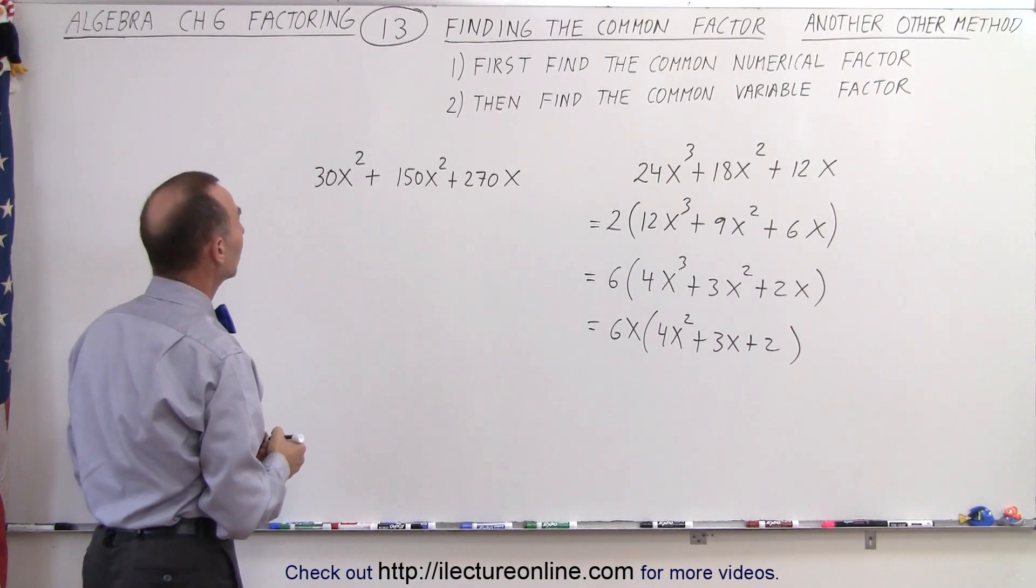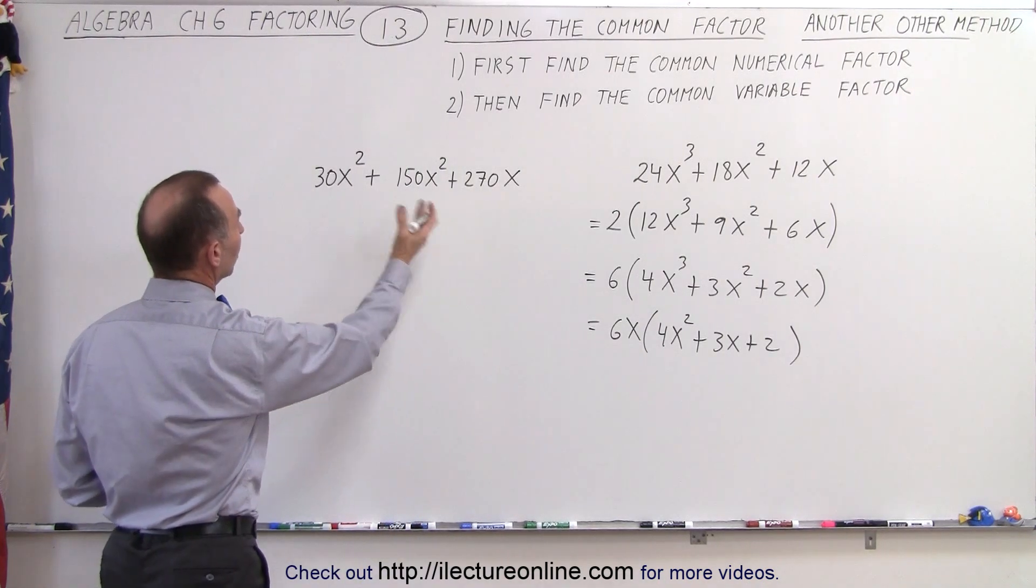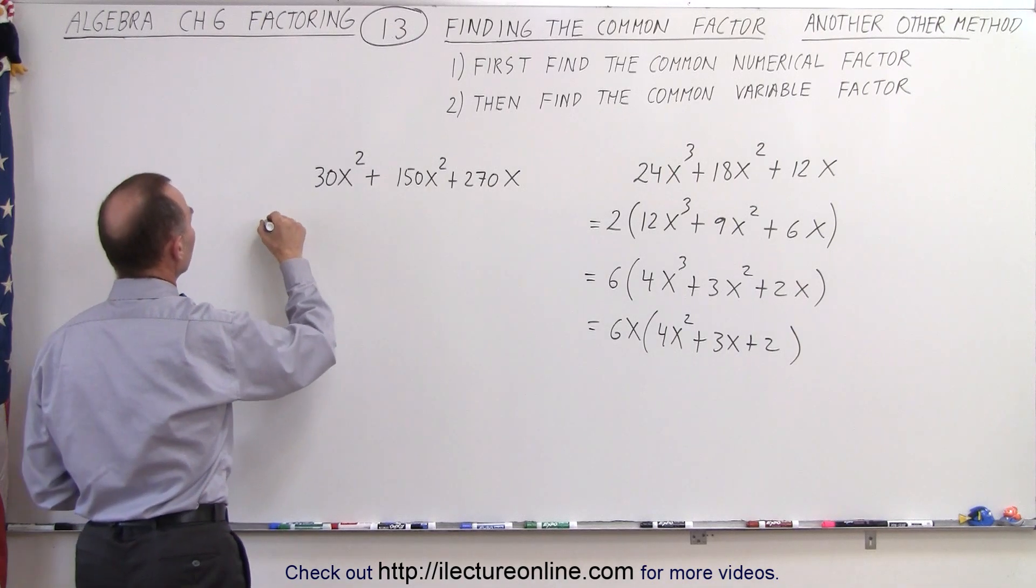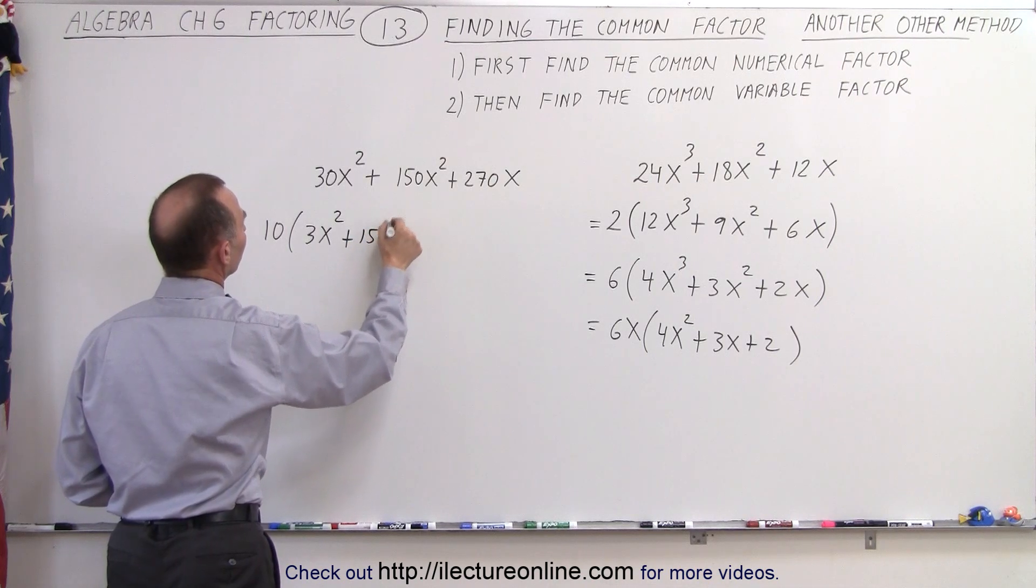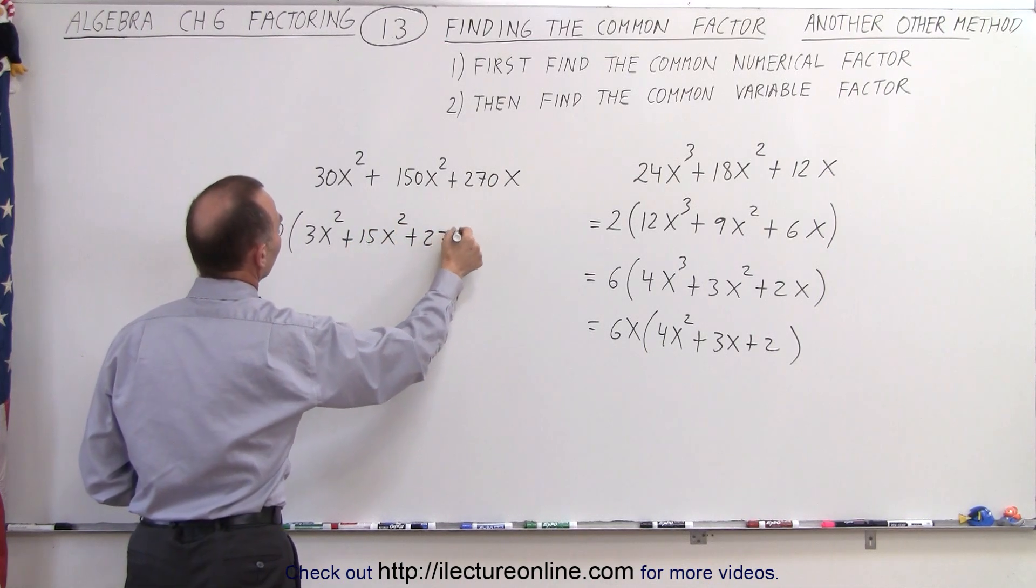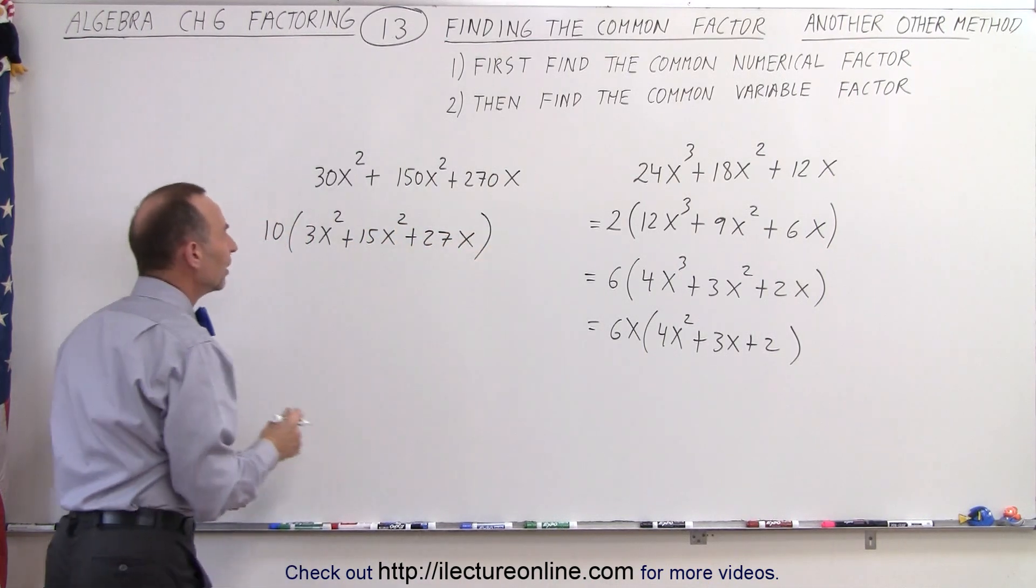We can do the same over here. Notice we can start out by pulling out a 10 everywhere, so this can be written as 10 times (3x³ + 15x² + 27x). And then you realize, well, they're still divisible by 3,